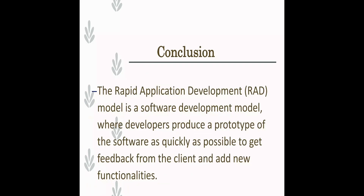In conclusion, the Rapid Application Development model is a software development model where developers produce a prototype of the software as quickly as possible to get feedback from the client on functionality. The objectives of the RAD model are: speedy development, adaptability and flexibility, and improved interaction with customers for satisfaction. Examples of RAD model use include employee resignation and travel request systems. RAD is appropriate when requirements are well understood, project requirements are stable and transparent, and when tasks require creative inquiry and innovation.